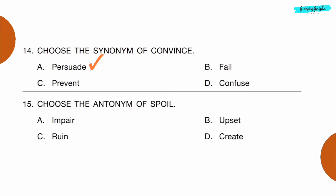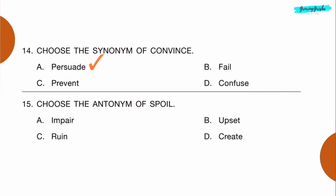Option C: G-Y-M-N-A-S-T-I-C-S, gymnastics. Question 14: Choose the synonym of 'convince.' Option A: persuade. Question 15: Choose the antonym of 'spoil.' Option D: create.